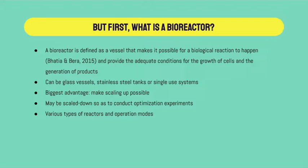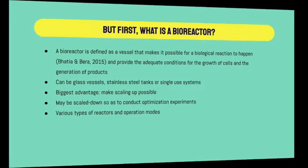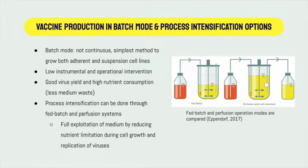Vaccines can be produced in batch mode. Batch mode for bioreactors is a method where the culture is not continuous and is regarded as the simplest method to grow both adherent and suspension cell lines. It requires low instrumental and operational intervention, gives very good virus yields, and has high nutrient consumption with less medium waste. Intensification of production through batch mode can be done through fed-batch and perfusion systems.